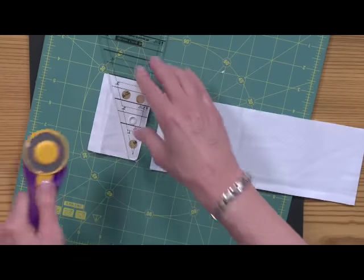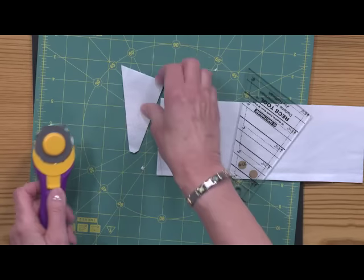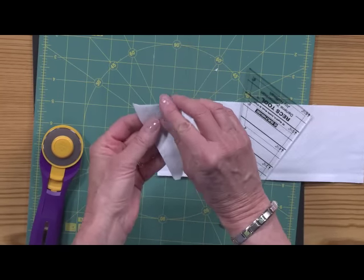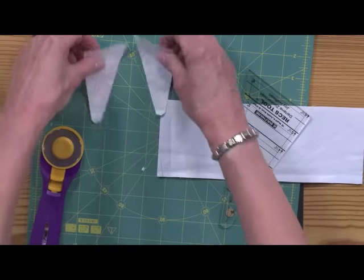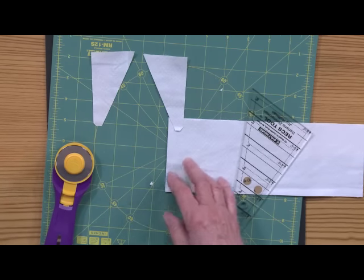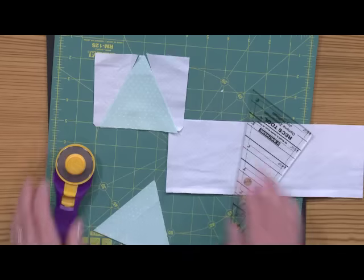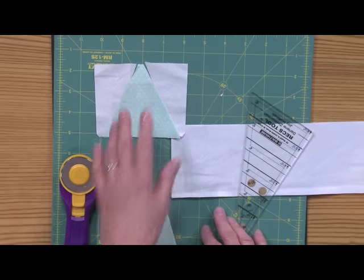Rotate your mat, cut the other two sides. So you have two triangles that are mirror images of each other. You'll need these to surround the A triangle, like this, and you'll sew them together to make this triangle unit.